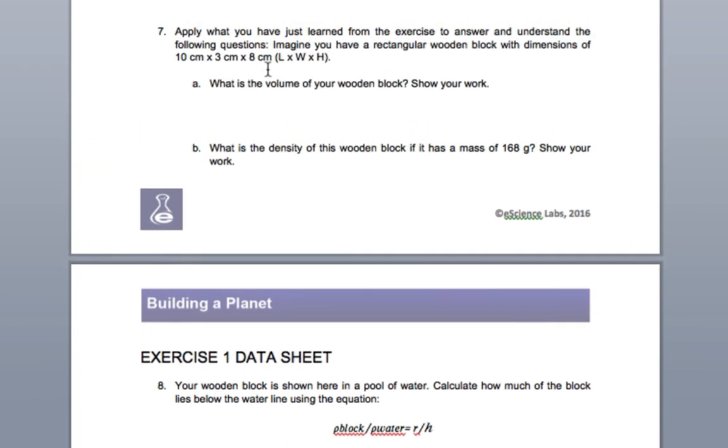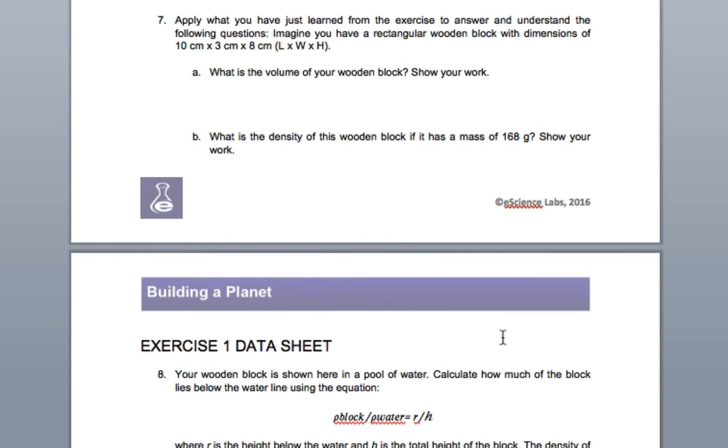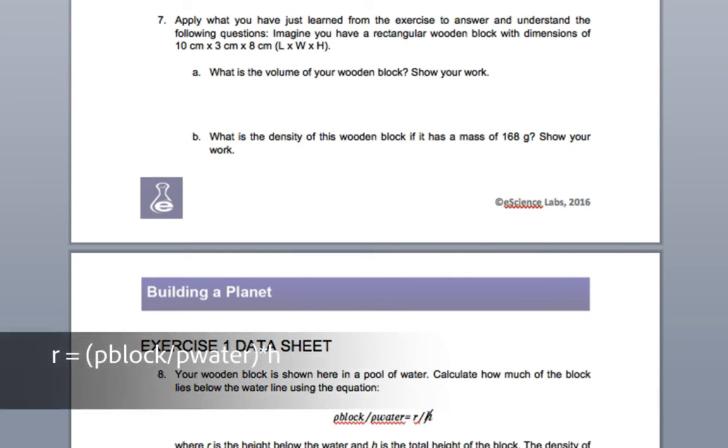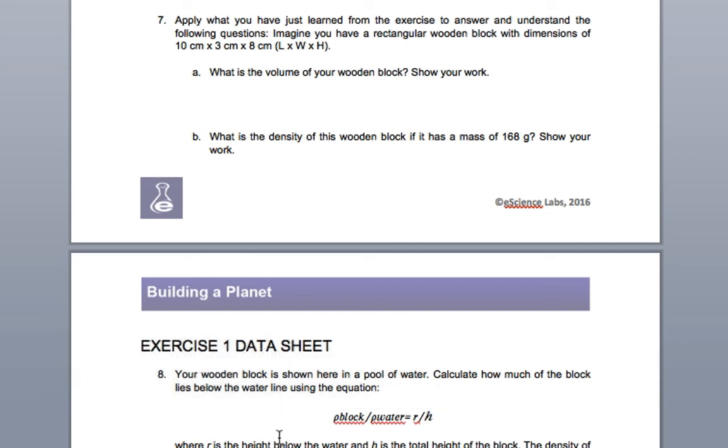Then over here, they use that same density you calculated for the block. You know the density of water is 1.0 grams per centimeter cubed. This equation, I don't like the way they have it formatted here. It's really the density of the block, which you calculated in the preceding problem, divided by the density of water, which is 1, equals this r, which is the height of the block underwater, divided by h. h is the total height of the block. The tricky part here - they give you h. h is right here, h is the height. h is 8 centimeters.